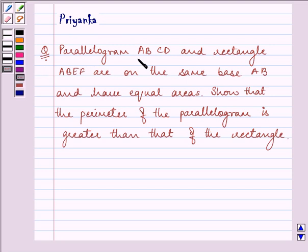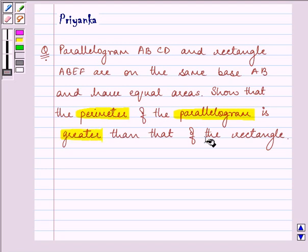It says parallelogram ABCD and rectangle ABEF are on the same base AB and have equal areas. Show that the perimeter of the parallelogram is greater than that of the rectangle.